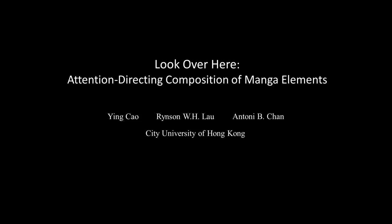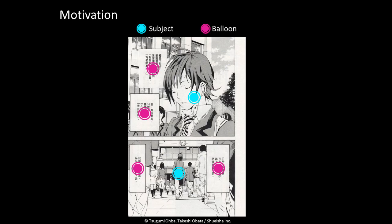In this video, we present an approach for interactive composition of subjects and balloons in manga. In manga, composition of picture subjects and text balloons are important for storytelling. To provide readers with a continuous and smooth reading experience, manga artists typically arrange subjects and balloons to guide the viewer attention through the page.